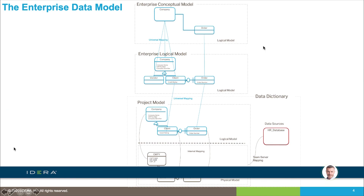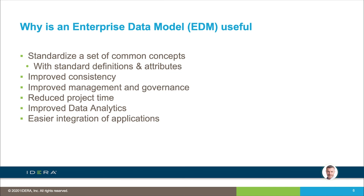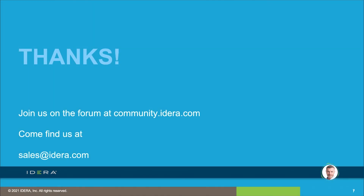So we've seen how to build an enterprise data model, how to browse through it in Team Server so extended teams can navigate the relationships across models, and how to build those relationships using the Universal Mapping tool and through Compare Merge which provides automation. We've also talked about why enterprise data models are useful: a framework to standardize our understanding of information, manage and govern data assets, improve time to produce models, manage and create the data warehouse, and allow applications to communicate. That's how to build an enterprise data model with universal mappings in ER Studio.